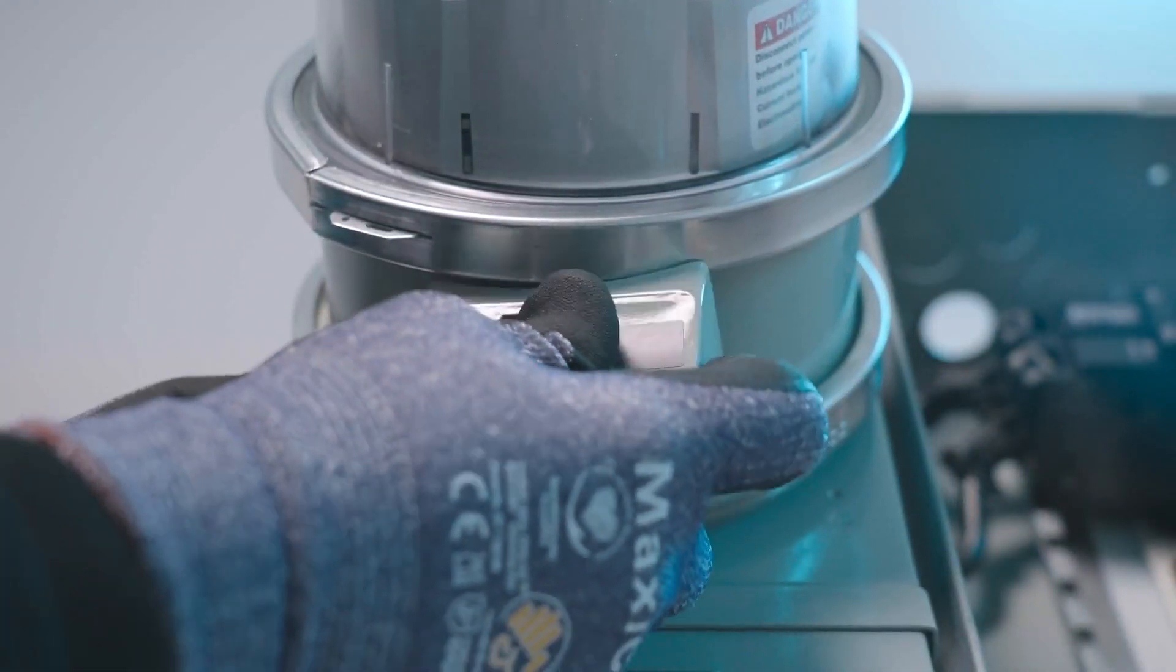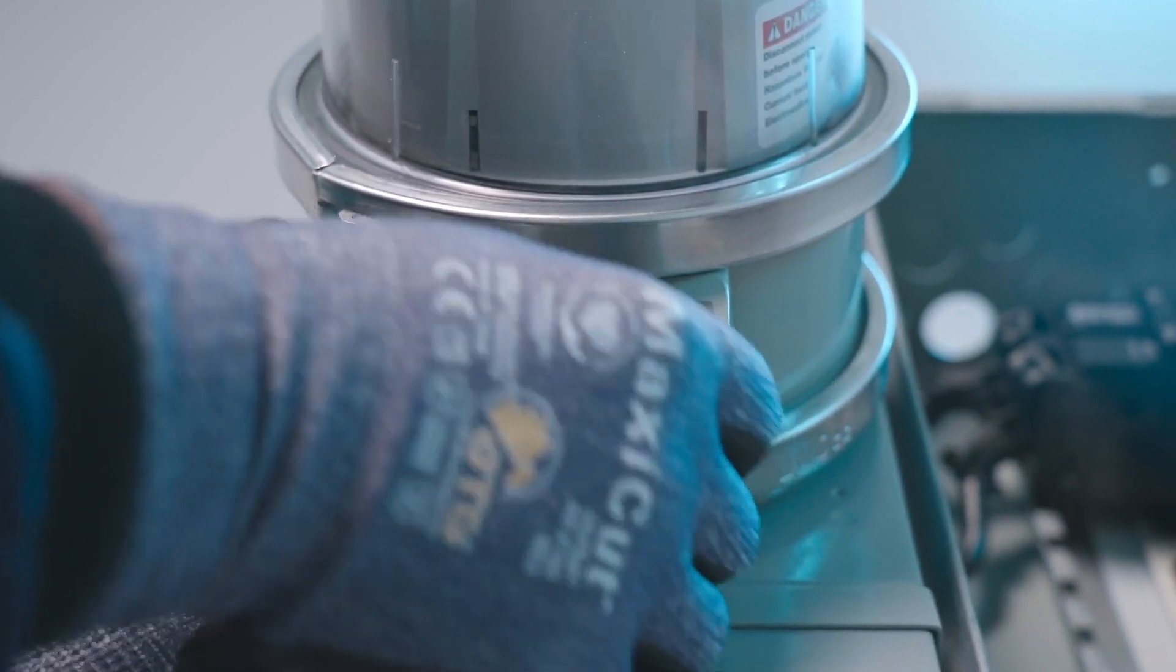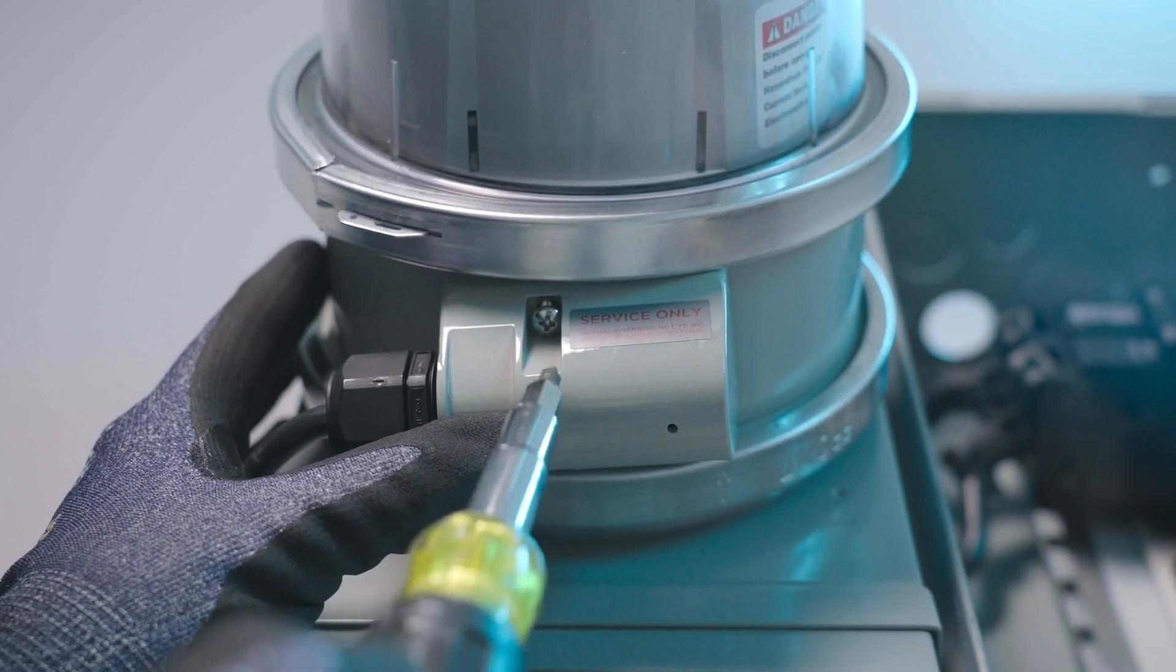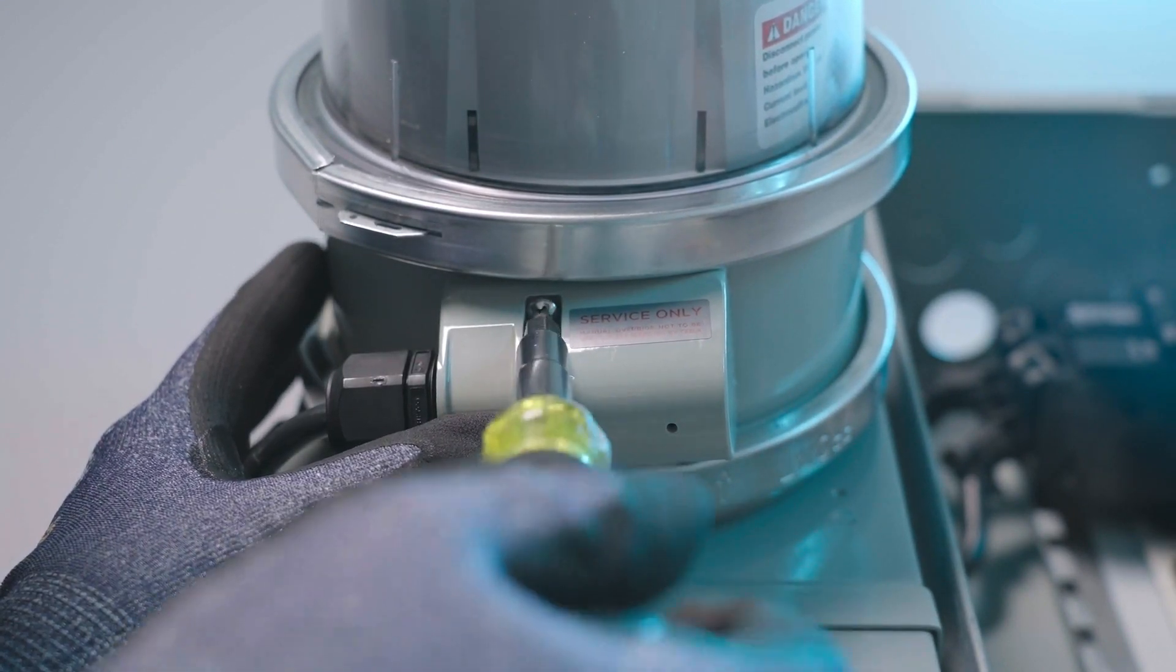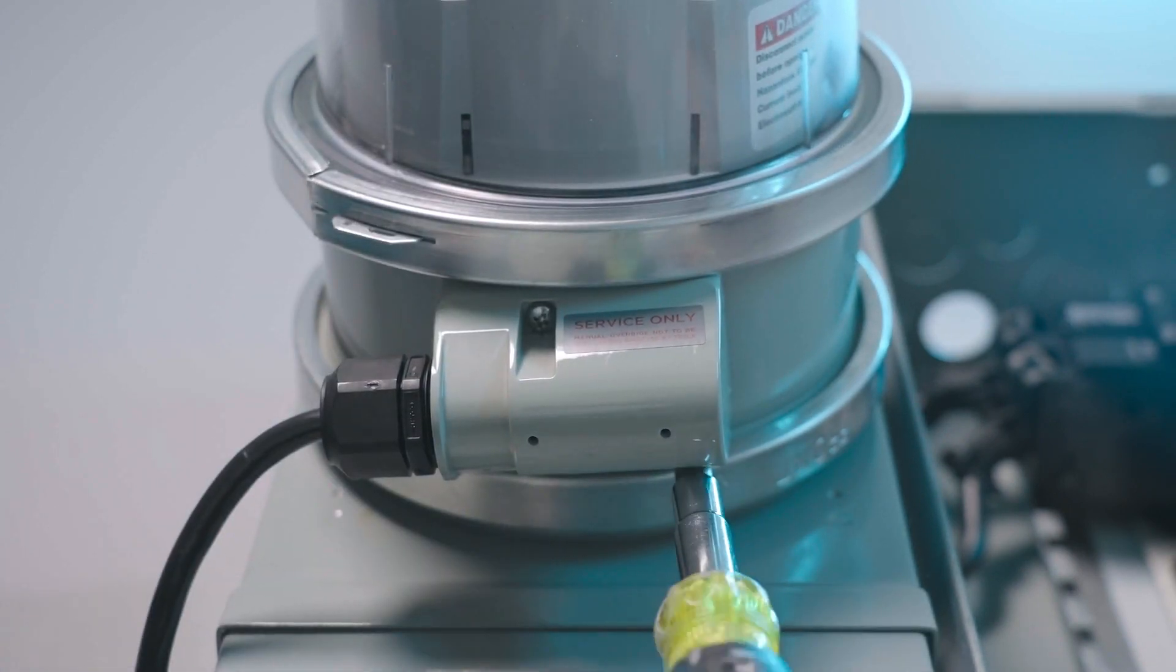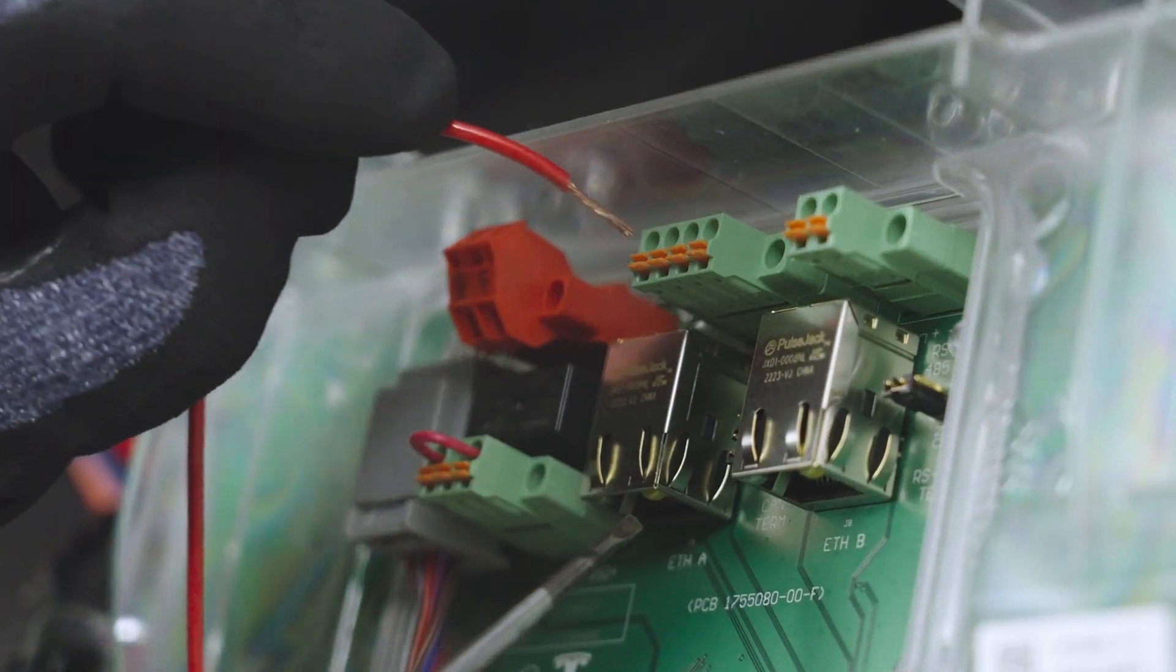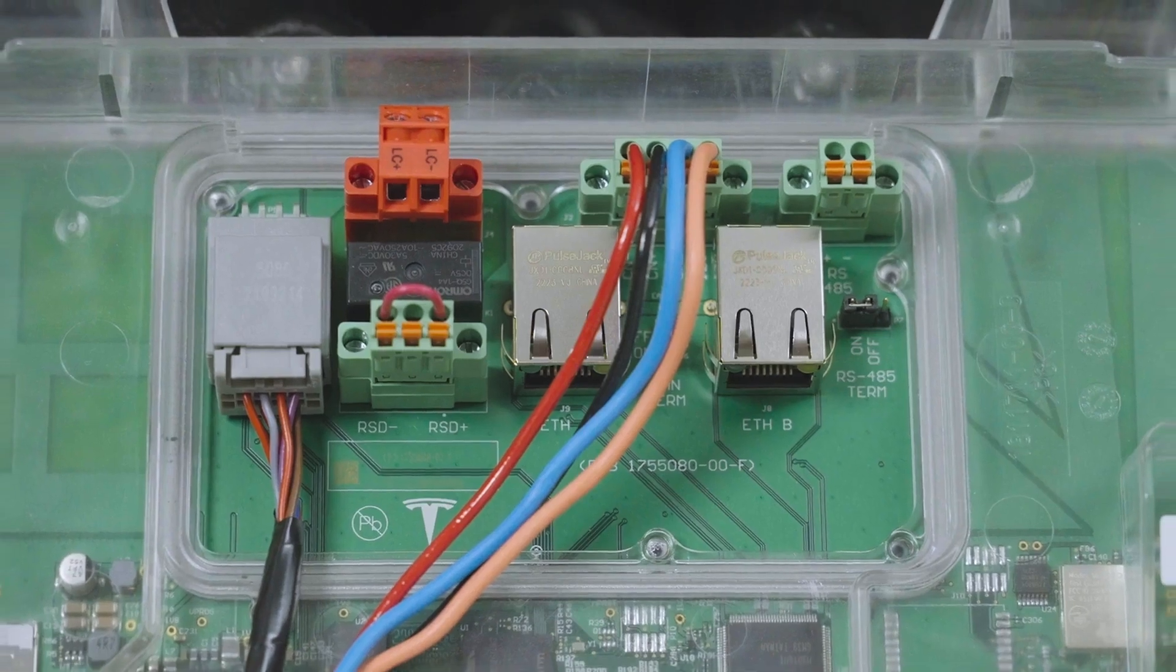Slide the conduit hub over the wiring and connector. Secure the conduit hub to the bottom of Backup Switch by hand-tightening the three included screws. The other end of the communication cable is terminated at the site controller. Please refer to the installation manual and product-specific wiring videos for more details.